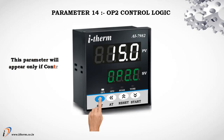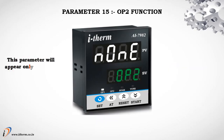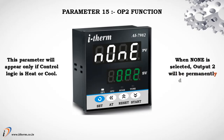Parameter 14: Output 2 control logic. This parameter will appear only if control logic is heat-cool. When none is selected, output 2 will be permanently deactivated. Parameter 15: Output 2 function. This parameter will appear only if control logic is heat or cool. When none is selected, output 2 will be permanently deactivated.